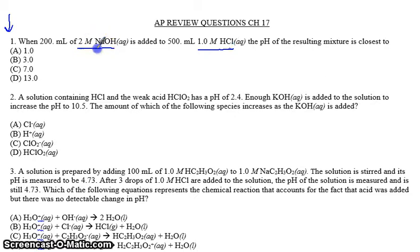So we're adding an acid, I'm sorry, a base, which is a strong base, to an acid, which is a strong acid. They will neutralize each other. So this is like a titration. Let's see how much of what will be left over. Again, you can't use the calculator on the multiple choice section of the AP exam, so we'll have to do this by hand.